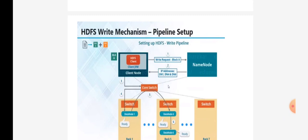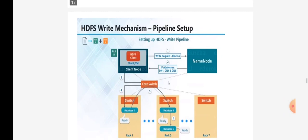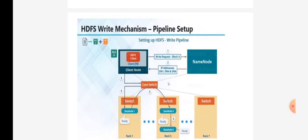In the second step, the name node will start processing and will ask the data nodes which are free to reply. It will get the IP addresses of the nodes which are freely available for storage. As discussed in previous lectures, the HDFS file system uses a replication factor for fault tolerance, storing data three times so that if there is a failure it will not create an issue. The name node will provide three data node IP addresses: DN1, DN4, and DN6.